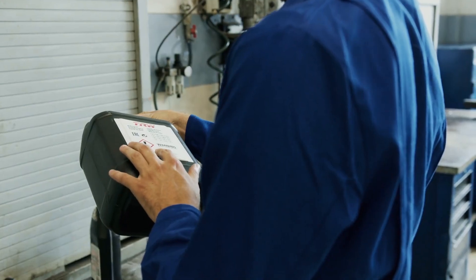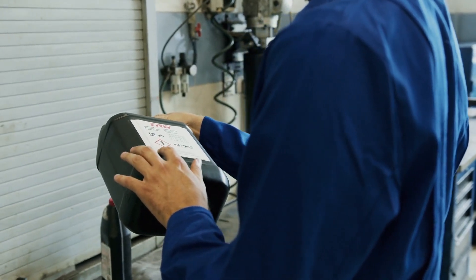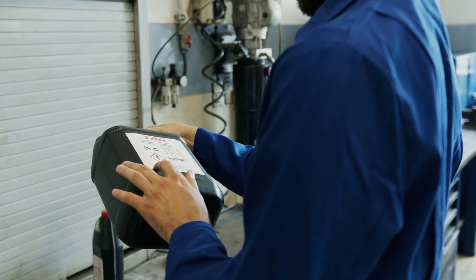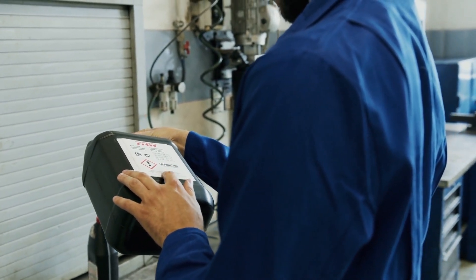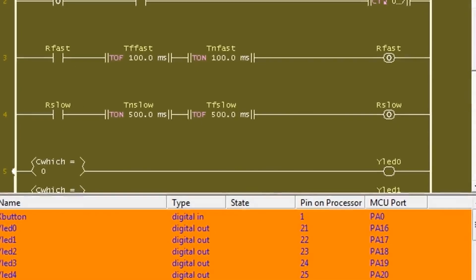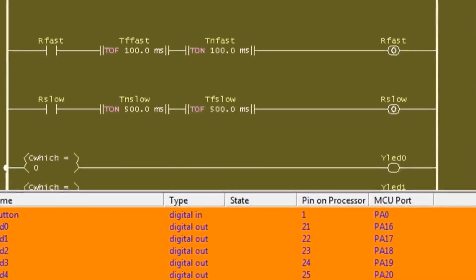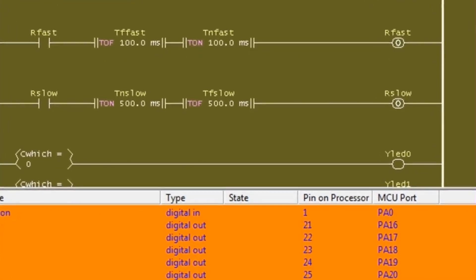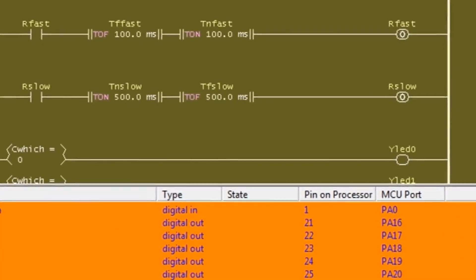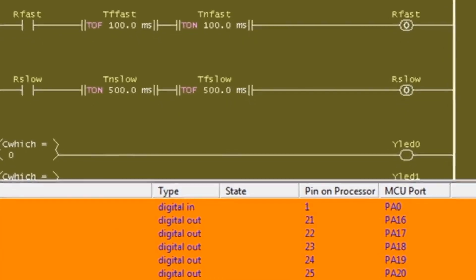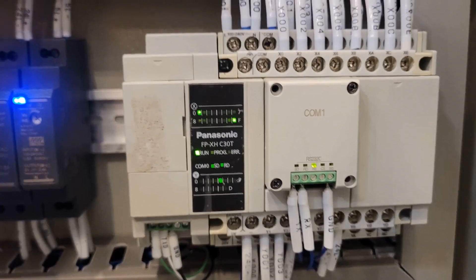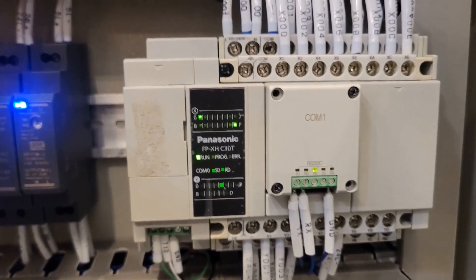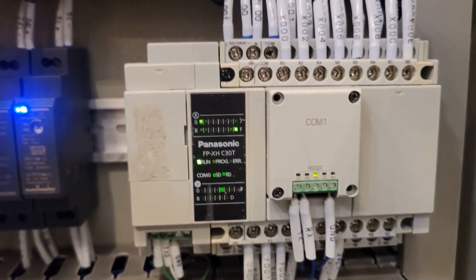Step 3: Write the PLC program. Using the flowchart as a guide, you'll now write the actual PLC program. This typically involves using one of the IEC 61131-3 programming languages, such as ladder logic, function block diagram, or structured text. The choice of language often depends on the specific application and your personal preference.